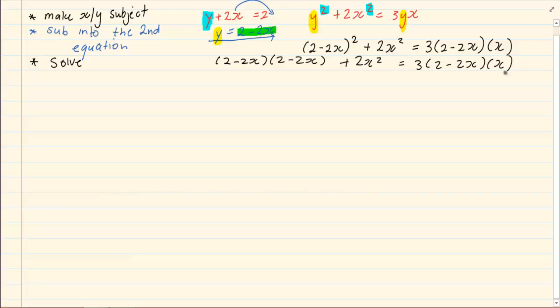Now, we start doing the Kitri-Kat or FOIL, the rainbow distributive law. 2 times 2 is equal to 4 plus 4x squared minus 4x minus 4x plus 2x squared is equal to. Now, here we can say x times 2 is 2x times 3 which will give us 6x. x times negative 2x is negative 2x squared times 3 gives us negative 6x squared.